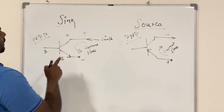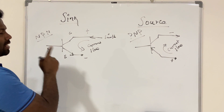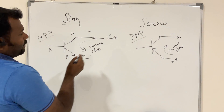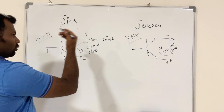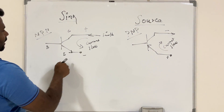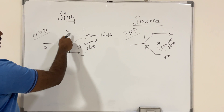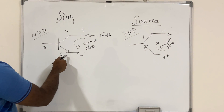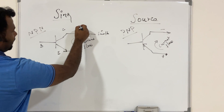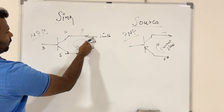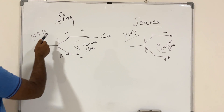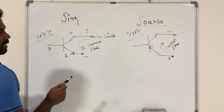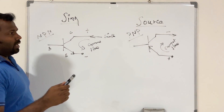Now we will see how the NPN and PNP transistors work in I/O cards. The I/O card connected with an NPN transistor is called sink type. In a sink type I/O card, the current flows from field to PLC — meaning the current sinks to the PLC. In the NPN transistor, the positive is connected to the collector side and the negative to the emitter side. The input is connected on the collector side, which is the positive side, so current flows from positive to negative and sinks to the PLC.